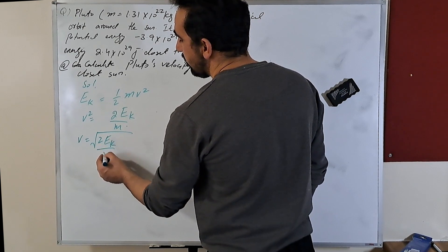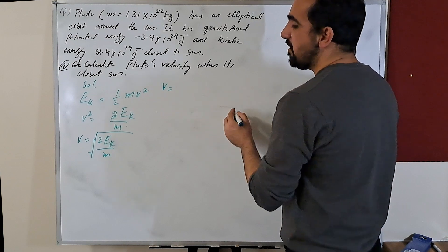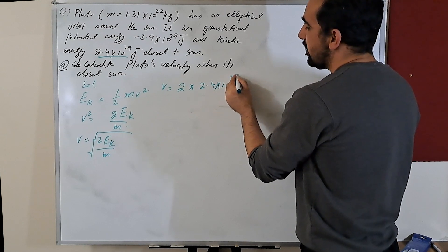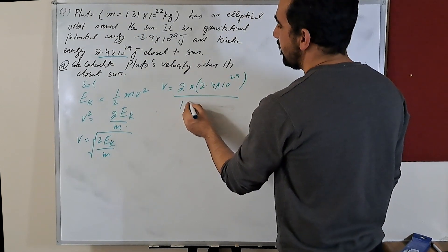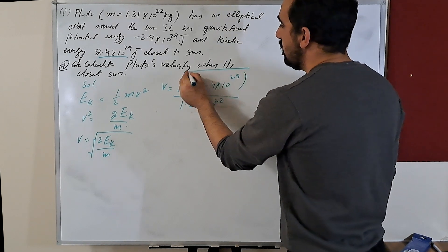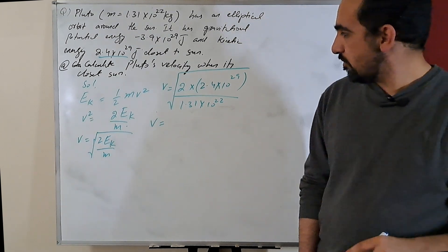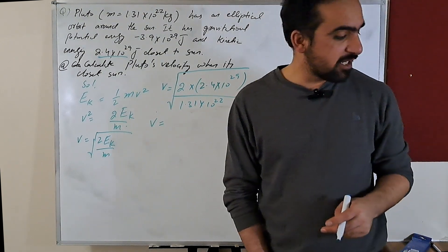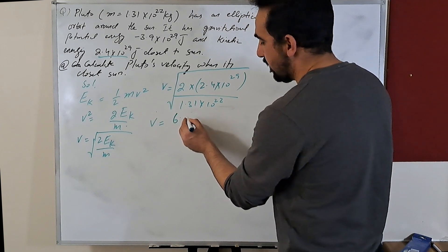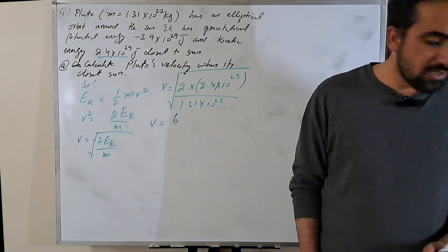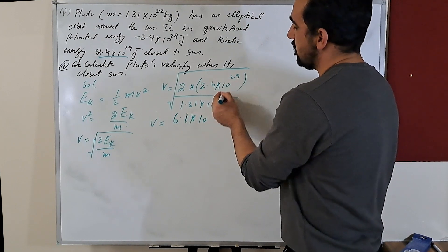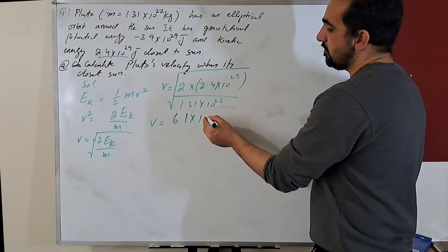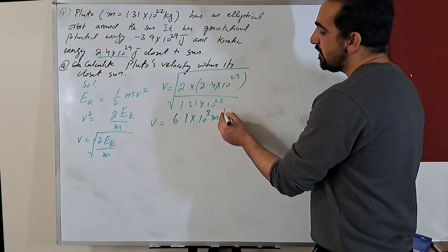The speed of Pluto equals the square root of 2 times kinetic energy — which is 2.4 × 10²⁹ — divided by mass, which is 1.31 × 10²². Multiplying: 2 × 2.4 gives 4.8, and 4.8 divided by 1.31 gives approximately 6.1. The powers of ten work out so the speed of Pluto is 6.1 × 10³ meters per second.